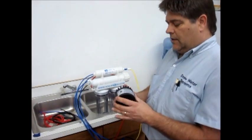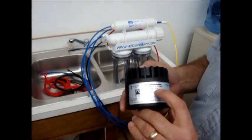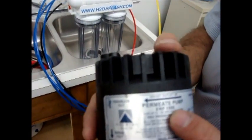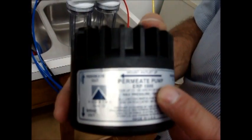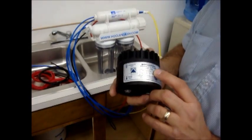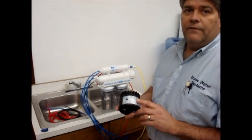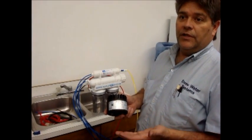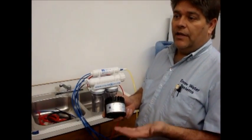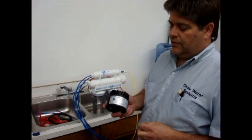These permeate pumps come in a 1000 series which would be for 100 gallon per day membranes or higher, probably up to 150 max, and then they come in a 500 series which would be anywhere from the 24 gallon per day up to 80 gallon per day membrane.